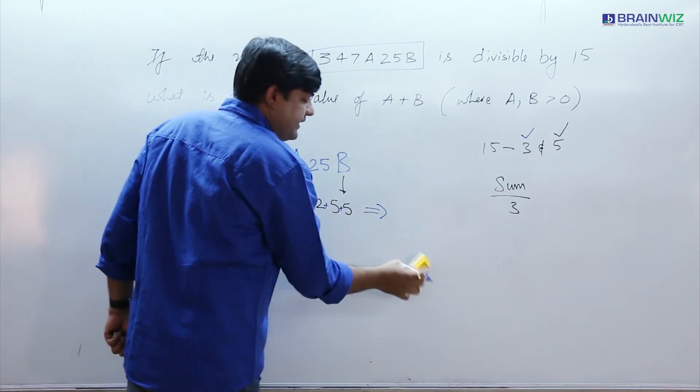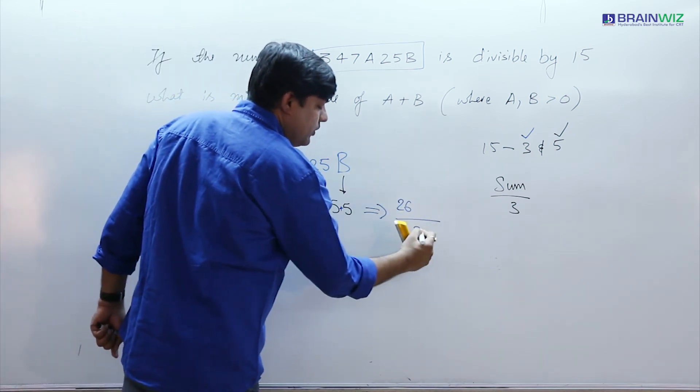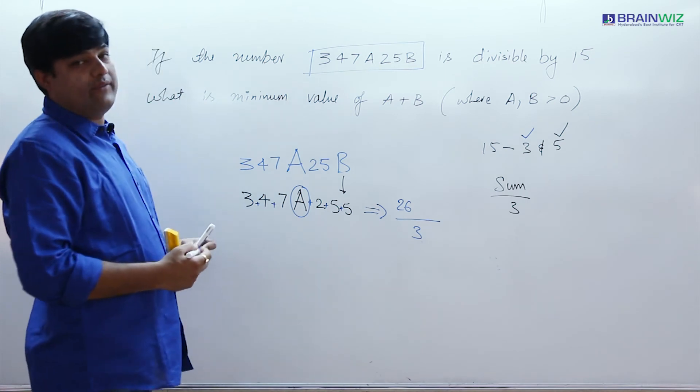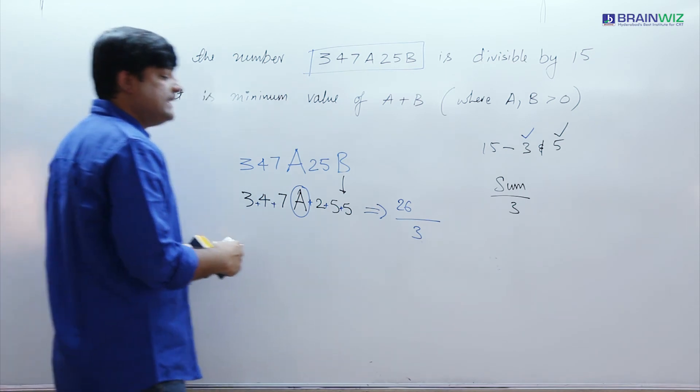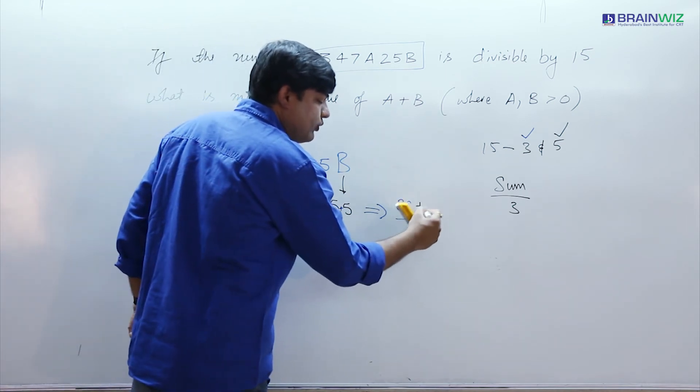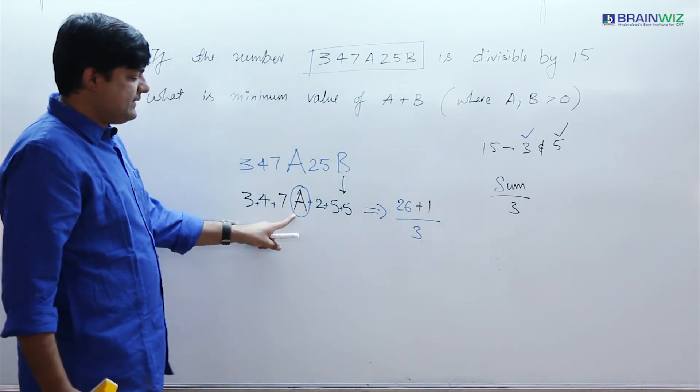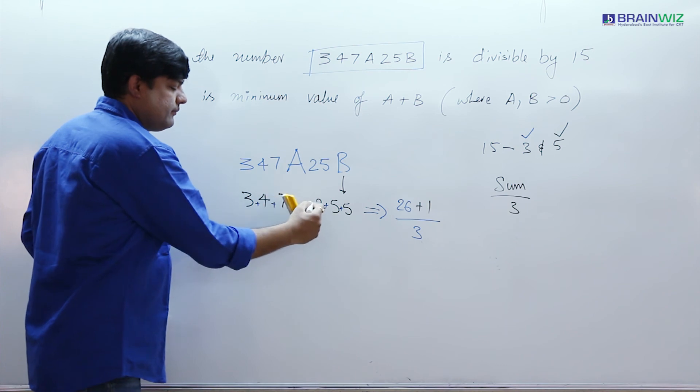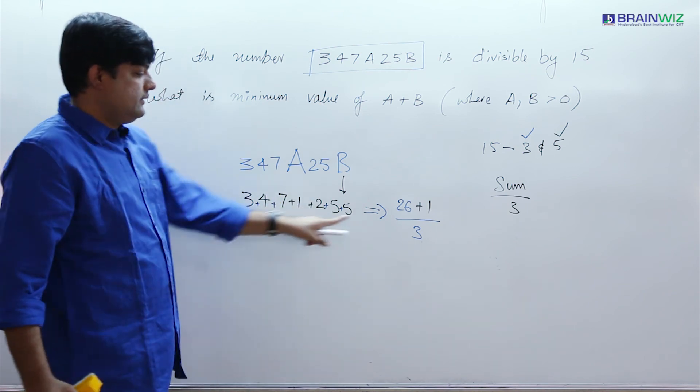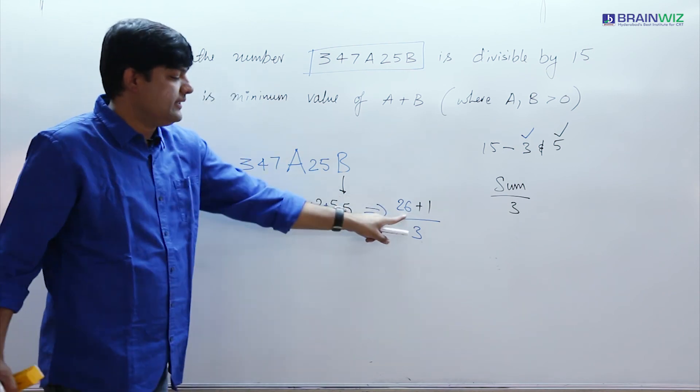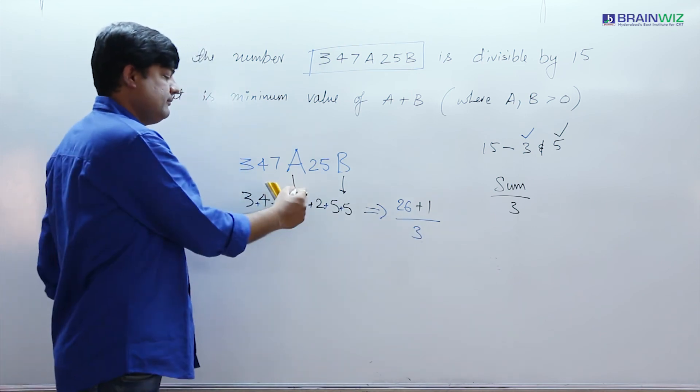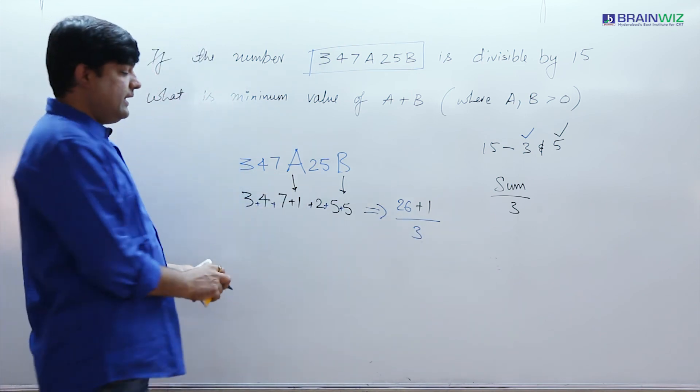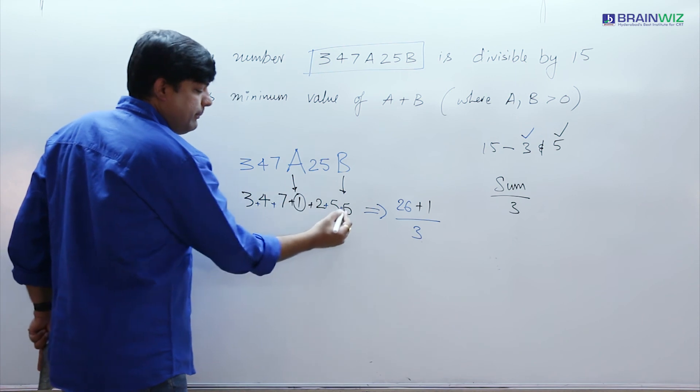Now as the sum is 26, I want it to be divisible by 3. We all have a knowledge that 27 is divisible by 3. So I have to add 1. So if I place A value as 1, then this value definitely makes 27 divided by 3. So we can understand that A value can be 1, B value can be 5.